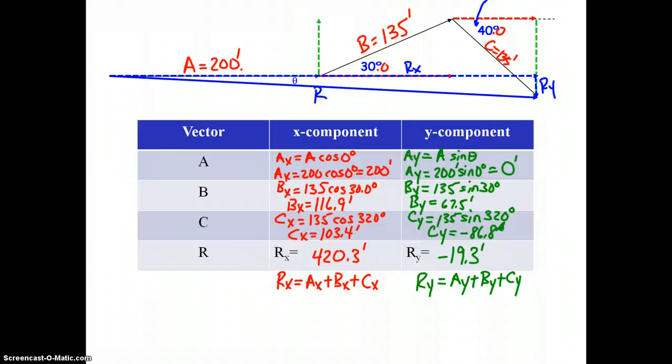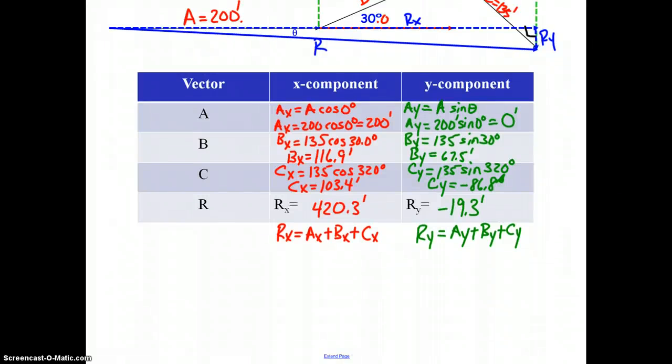Now, why have we done all this? What is the relationship between Rx and Ry? Rx lies in the x-plane, Ry lies in the y-plane. That means they are perpendicular to each other. So what we have formed by Rx, Ry, and R itself is a right triangle. We can now proceed to calculate the values of R and theta. R squared would be Rx squared plus Ry squared using Pythagorean theorem.